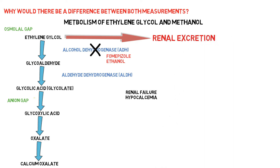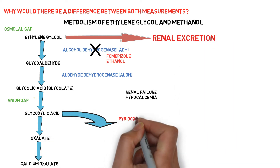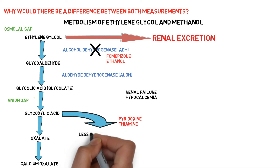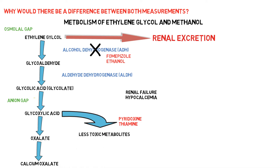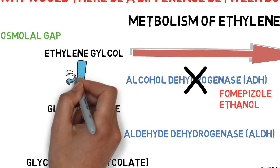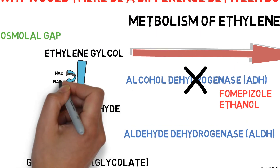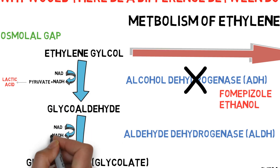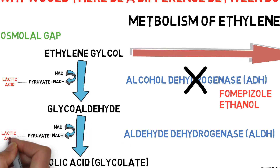On the other hand, pyridoxine and thiamine can be used to try to convert the metabolism of glyoxylic acid into less toxic metabolites. With both enzymes — alcohol dehydrogenase and aldehyde dehydrogenase — NAD is converted to NADH, which combines with pyruvate to produce lactic acid.